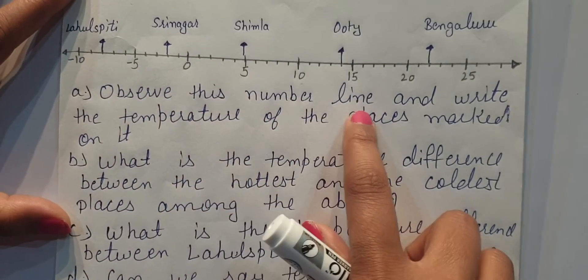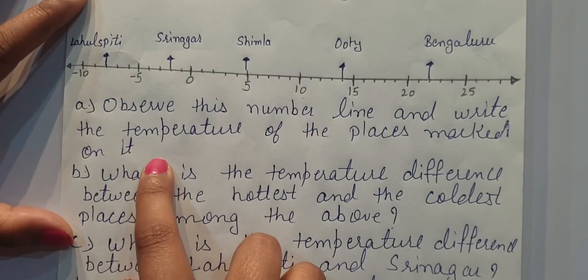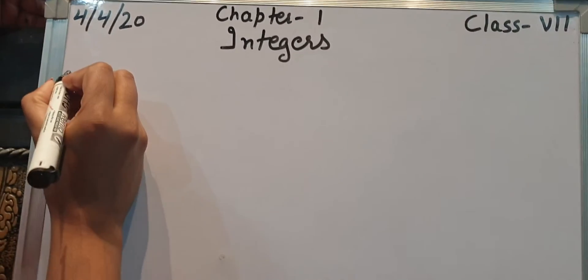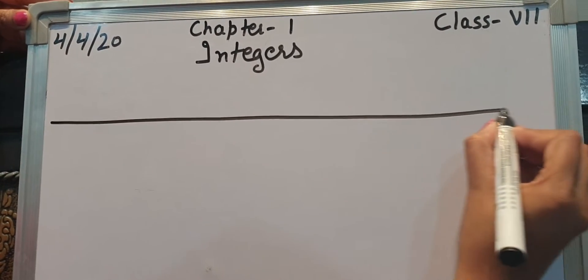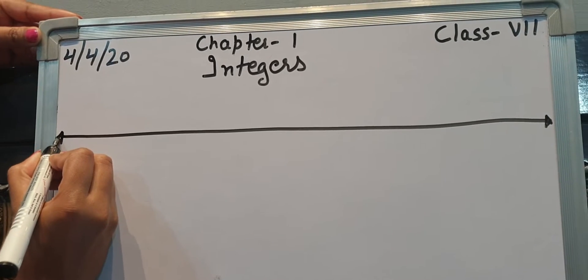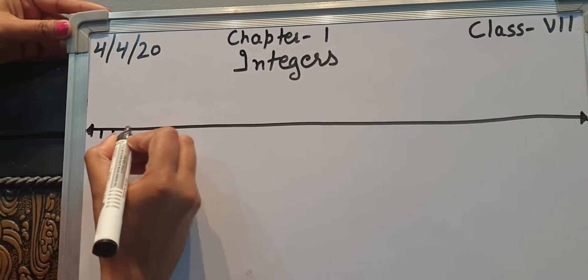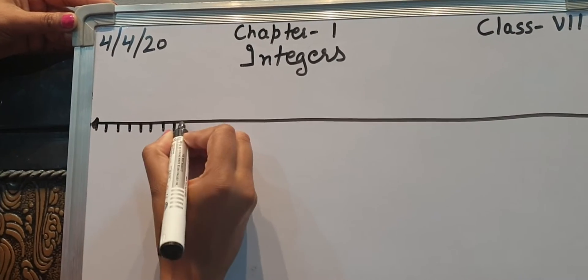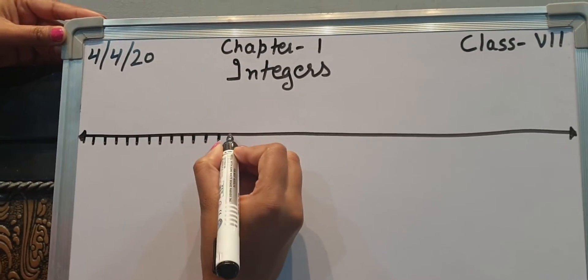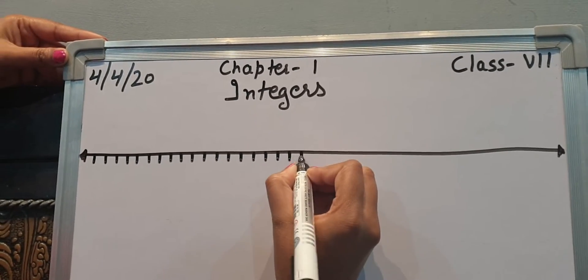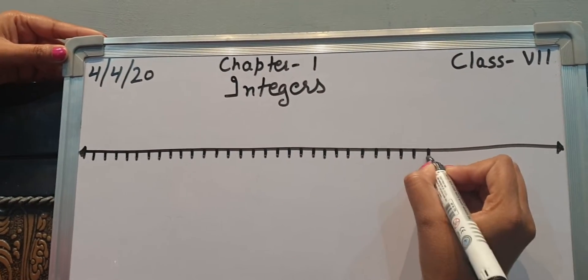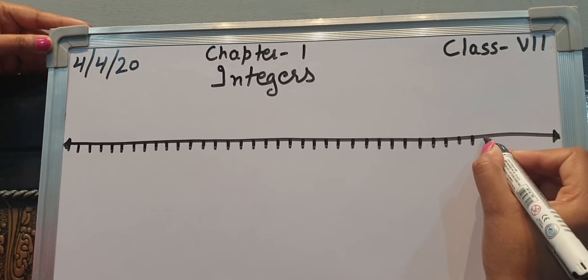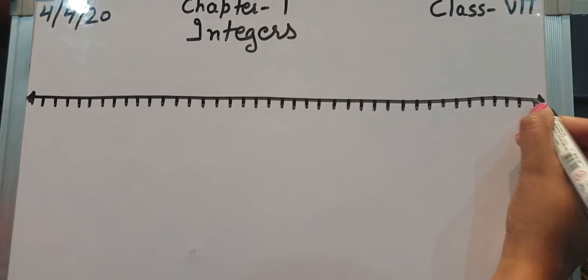The first point says: observe this number line and write the temperature of the places marked on it. So first we will draw a number line carefully, a little below so we have space to write the place names. I will try to take equal margin between integers. I am not using a scale, so spaces between integers may not be perfectly equal, but the distance between two consecutive integers must be the same.